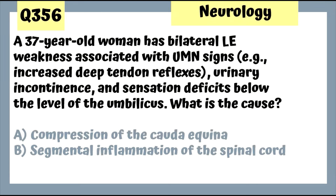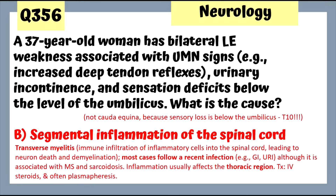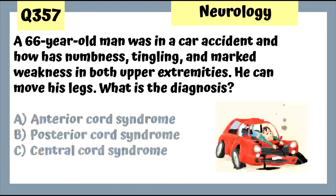Question 356: A 37-year-old woman with bilateral lower extremity weakness, upper motor neuron signs, urinary incontinence, and sensory deficits below the umbilicus — this is not cauda equina compression (which wouldn't reach the umbilicus) but segmental inflammation of the spinal cord — transverse myelitis. Treatment is steroids and often plasmapheresis; associated with multiple sclerosis and sarcoidosis.